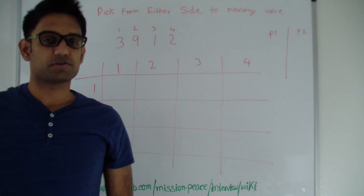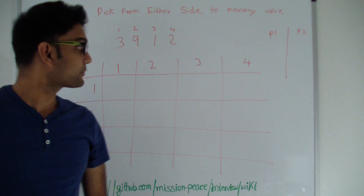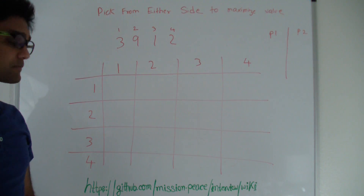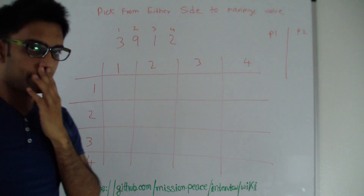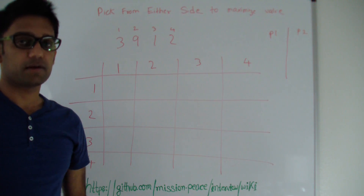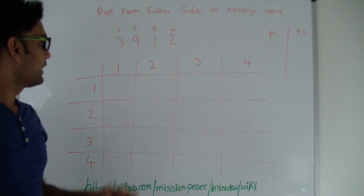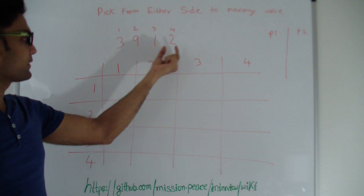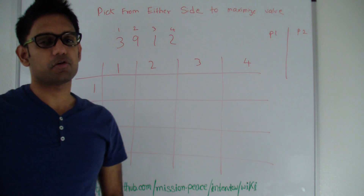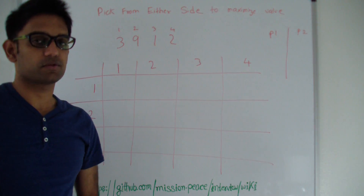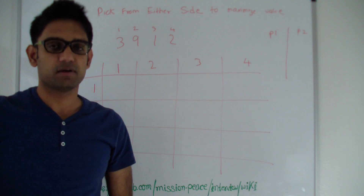Hello friends, my name is Tushar and today we are going to look at this problem. Suppose you are given an array and there are two players and they can pick from either end of the array. How do you play so that you can maximize your profit?